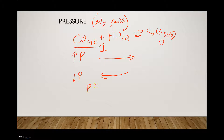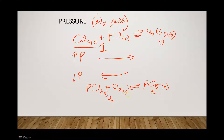Looking at another example: PCl3 plus Cl2 is in equilibrium with PCl5, and all are gases. On the left you have two moles of gas; on the right you have only one mole. So if you increase the pressure, there are more moles of gas on the left-hand side, and it's going to shift to the right. If you decrease the pressure, you shift to the left because it always goes towards the greater moles of gas.